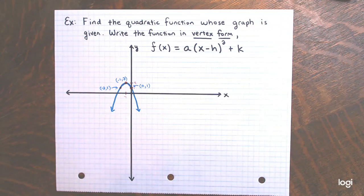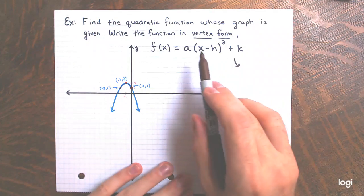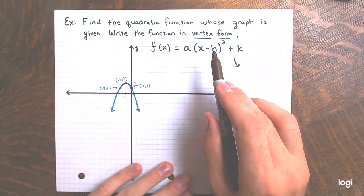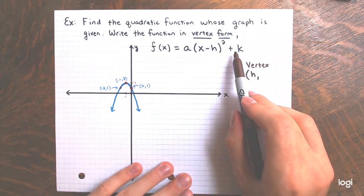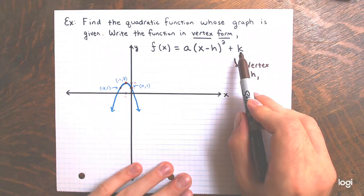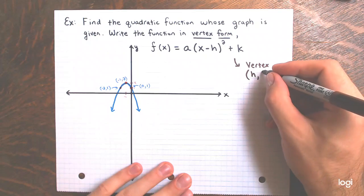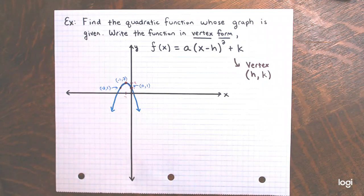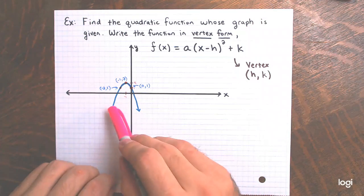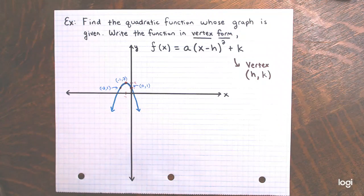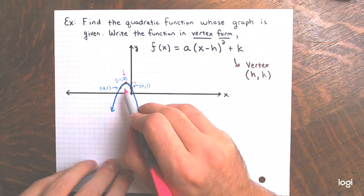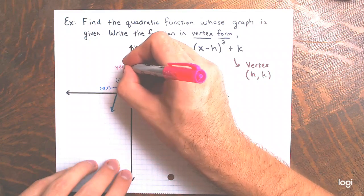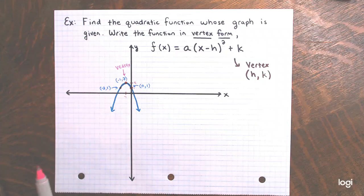If I write the equation of a parabola in this form, the h inside the parentheses being subtracted from x is the x-coordinate of the vertex, and the plus k outside the square is the y-coordinate of the vertex. So if we know the vertex — and we can see it right here on this parabola — since this is opening down, the vertex is the highest point, which has coordinates negative 1, 2.